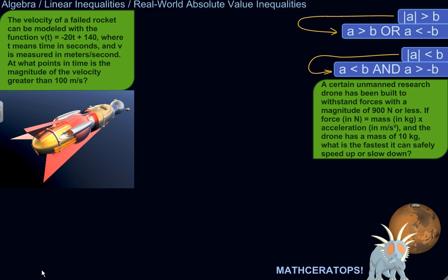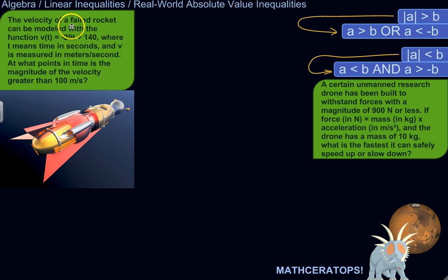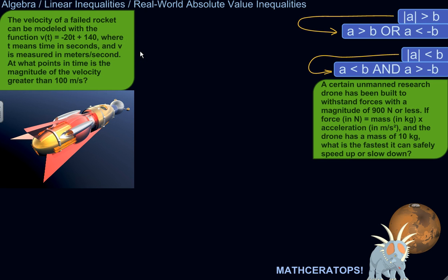So, the velocity of a failed rocket can be modeled with the function: velocity at time t equals negative 20 times t plus 140, where t means time in seconds and velocity is measured in meters per second.